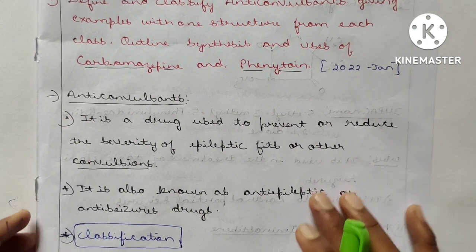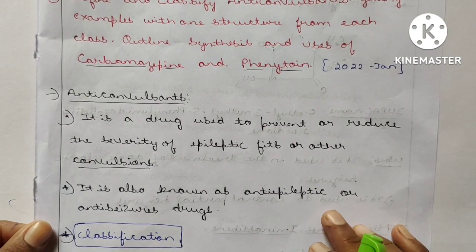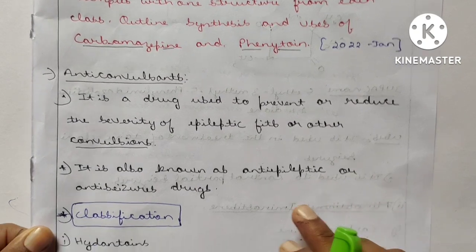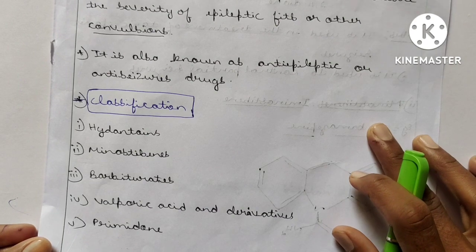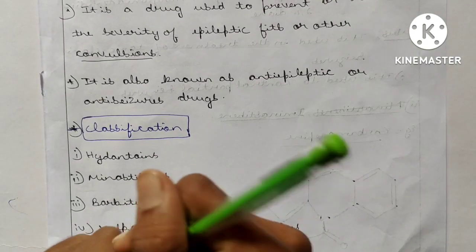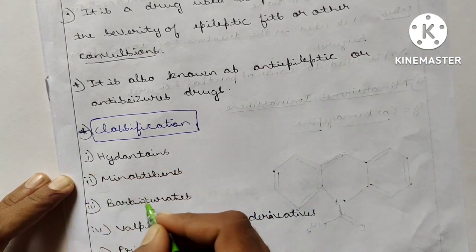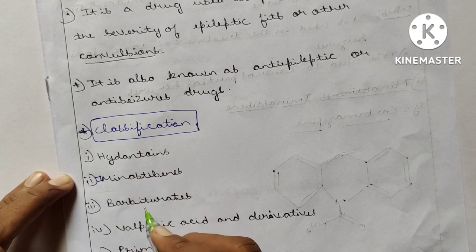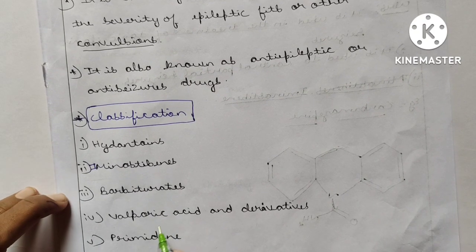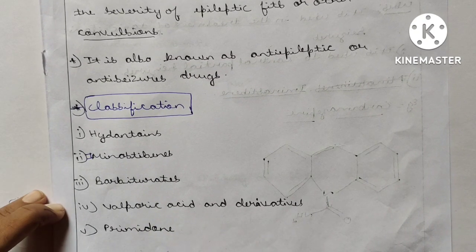Now classification. Here mainly five classifications: hydantoins, iminostilbenes, barbiturates, valproic acid and derivatives, and primidone. These are the five classifications.